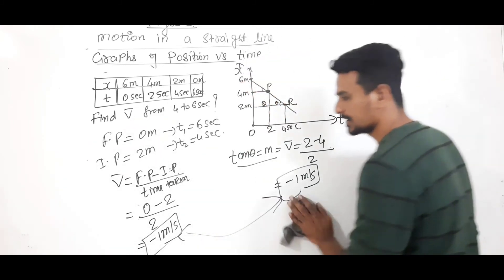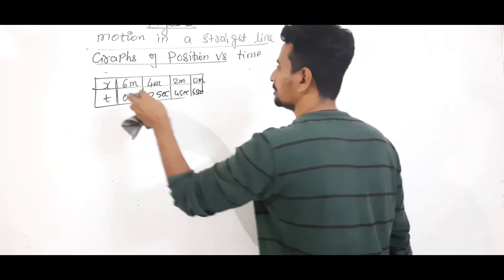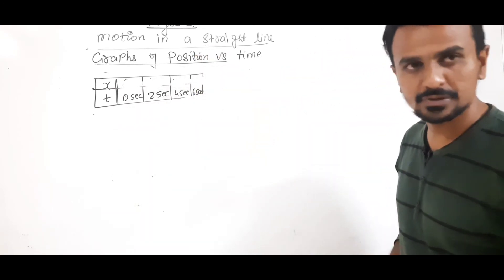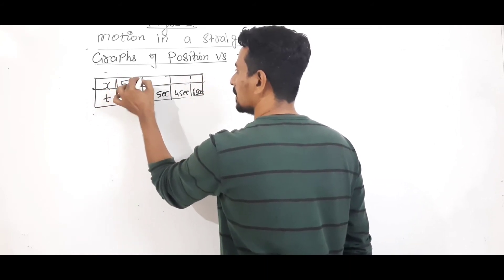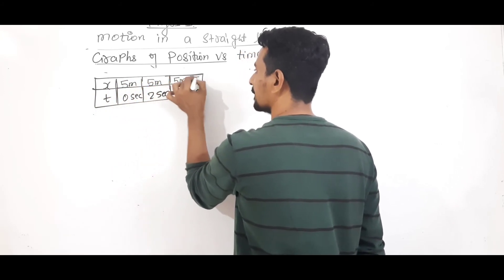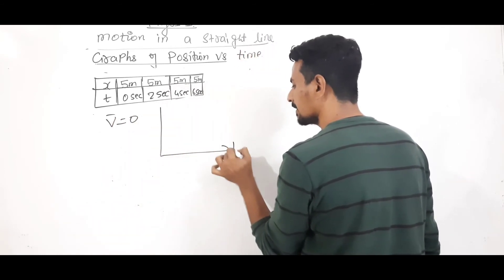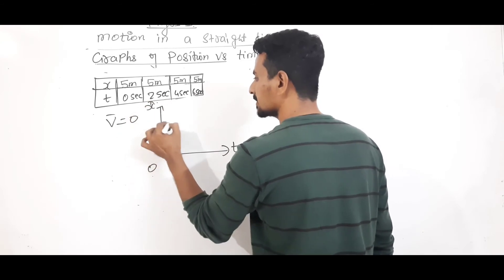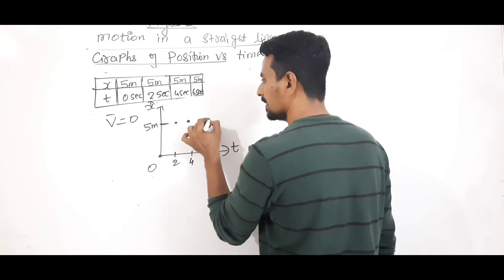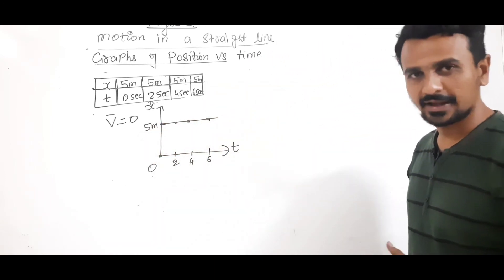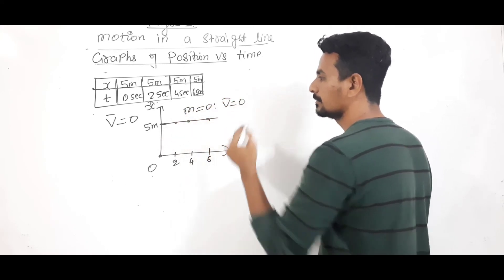This graph represents uniform motion — object traveling with constant velocity. Now, what if the object does not change position? Suppose the object is at 5 meters at 0 seconds, still 5 meters after 2 seconds, 4 seconds, and 6 seconds. That means the object is at rest. The graph will be a horizontal line at 5 meters. Theta is 0, so tan theta is 0, slope is 0, and velocity is 0.